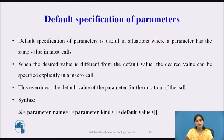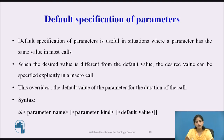The third type of parameter is the default specification of parameter. This is useful in situations where a parameter has the same value in most calls. When the desired value differs from the default value, it can be specified explicitly in the macro call, which overrides the default value for the duration of the call.